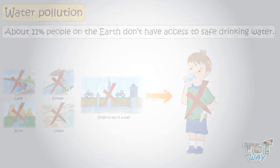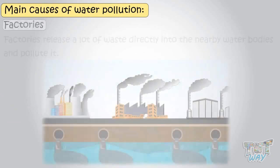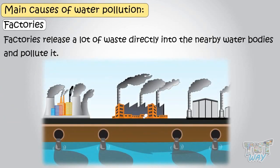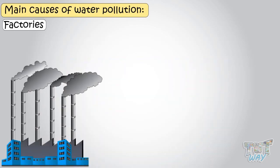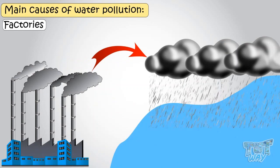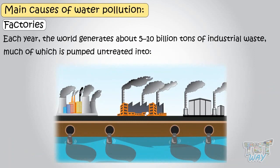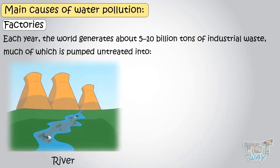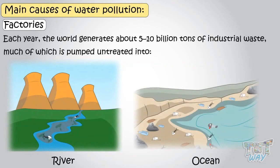Now we will learn what are the main causes of water pollution. Most factories, industries, and manufacturing units release a lot of waste directly into the nearby water bodies and pollute it. Even the smoke released by chimneys of factories reaches the water along with polluted rain, and so pollutes water. Each year, the world generates about 5 to 10 billion tons of industrial waste, much of which is pumped, untreated, into rivers, oceans, and other waterways. And it is the main reason behind water pollution.